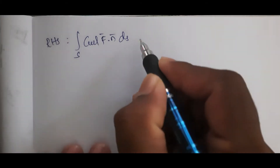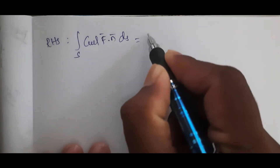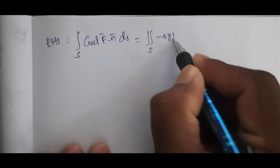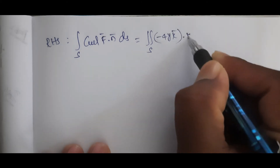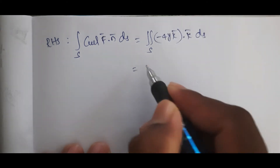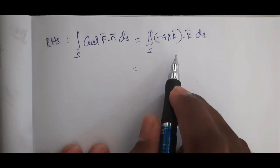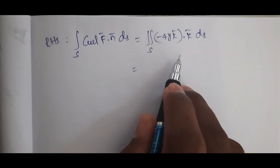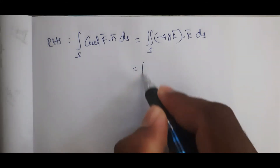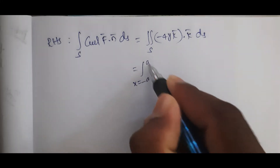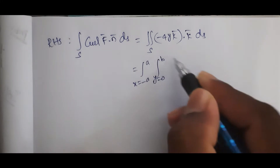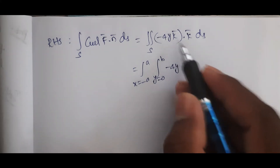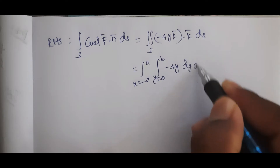RHS = ∬_S (curl F̄)·n̄ dS = ∬ (−4y k̄)·(k̄) dS. Since k̄·k̄ = 1, with limits x from −a to a and y from 0 to b, this becomes the integral of −4y dy dx.